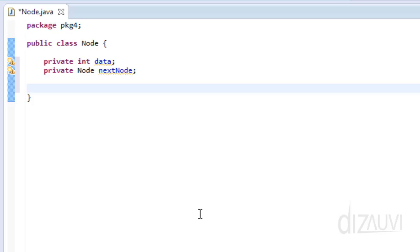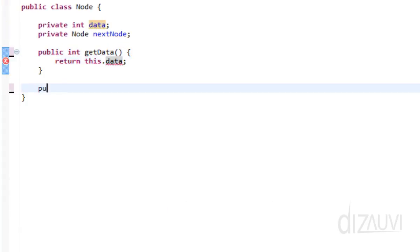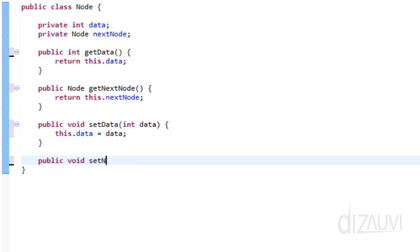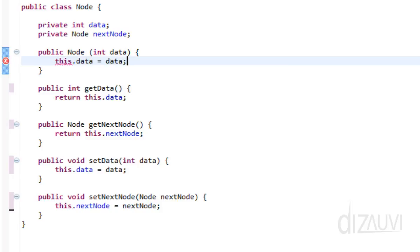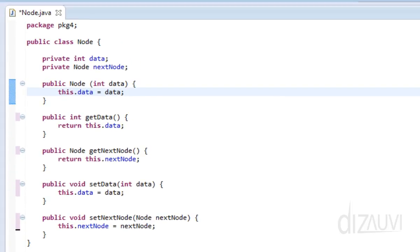So to access these, we use getters. Now let's write a constructor for the node class like this. So our node class is complete and we can create objects from this class. Now let's turn our attention to a linked list.